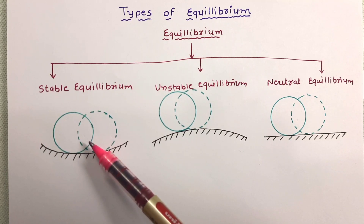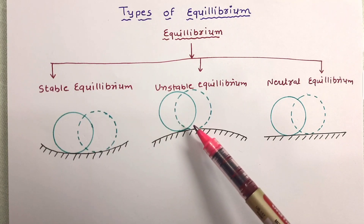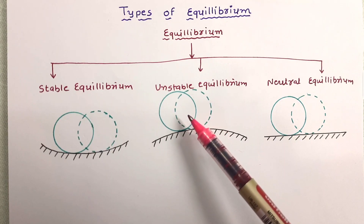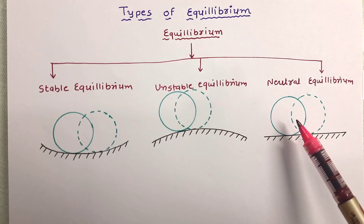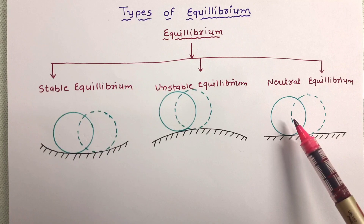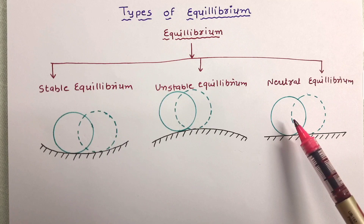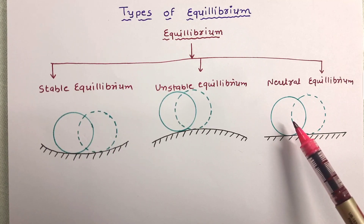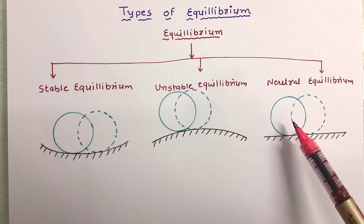This kind of equilibrium is called stable equilibrium. After the displacement, this sphere will never come to its original position — so that is called unstable equilibrium. And in this case, after getting the displacement, the sphere will change its position and occupy a new position, with not much change in its position of rest. So this kind of equilibrium is called neutral equilibrium.